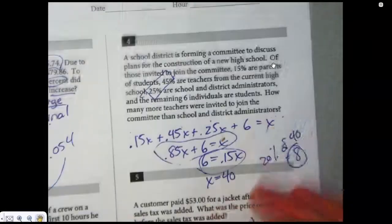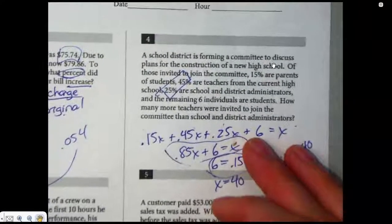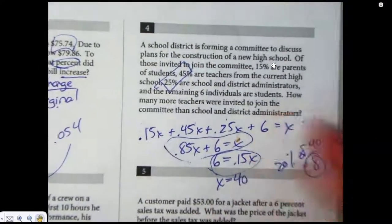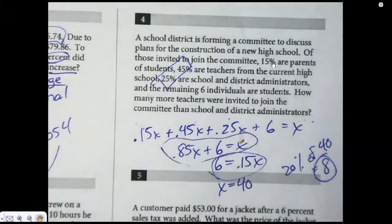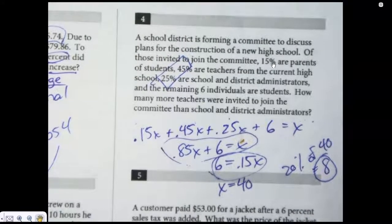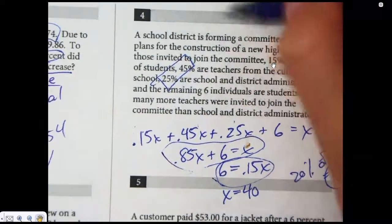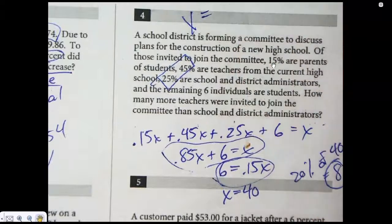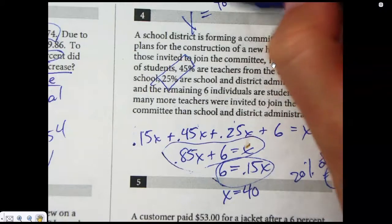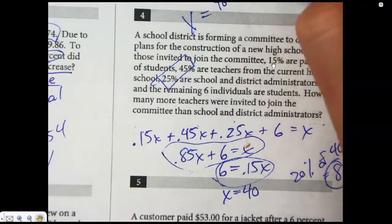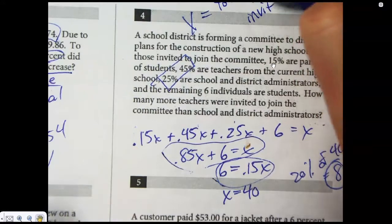Number four, this is a trickier one also. Some of these percent ones can get rough. Like they seem like they're not too bad, but when you get into it, you got to make a few choices. If you go the wrong way, it can easily lead you down the wrong path. So what I did in this one is call x the total number of people that were invited to join the committee.